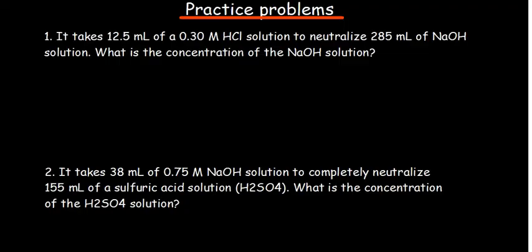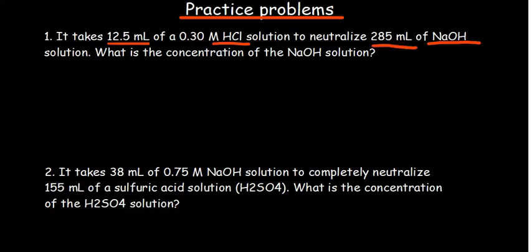Now that we understand the basic idea behind titration, we can look at some practice problems. Problem 1: It takes 12.5 mL of a 0.3 M hydrochloric acid solution to neutralize 285 mL of sodium hydroxide solution. What is the concentration of the sodium hydroxide solution? We've been given HCl as the acid and NaOH as the base — acid-base titration involving neutralization. We know the concentration of HCl but not the concentration of NaOH, which is what we need to find.